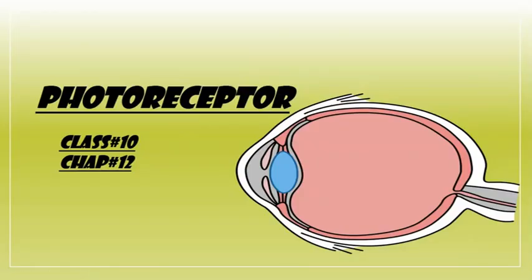Assalamu alaikum and hello everyone, welcome back to my channel. Today's topic is the photoreceptor. In the previous topic I told you the definition: photo is taken from light while receptor is the stimulus or receiving part of the body. The part of the body which perceives light is known as the photoreceptor, and the example I gave is the eye. Today we will study about the structure of the eye and the mechanism of vision.